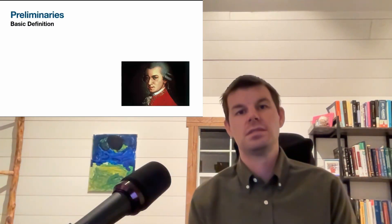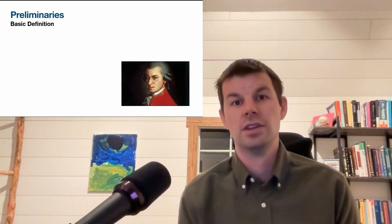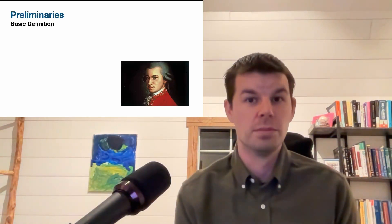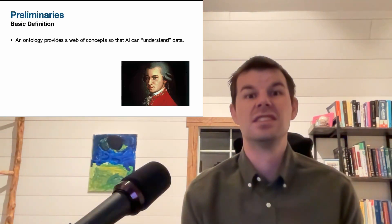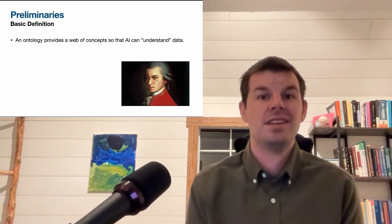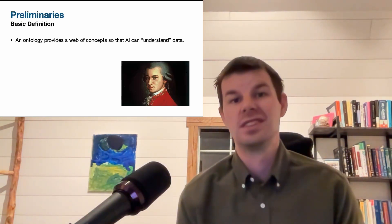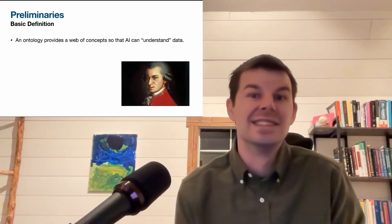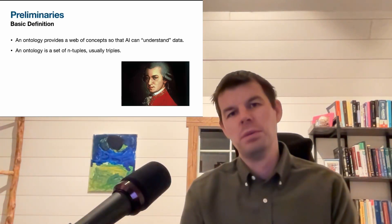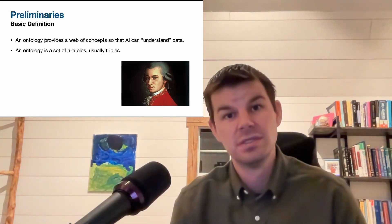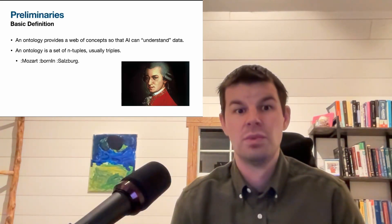Before we get into those, a couple of preliminaries. In the first video, which you should go back and watch if you haven't yet, we covered what an ontology is. It provides a web of concepts so that the artificial intelligence can understand your data, or act as if it were understanding your data. An ontology, maybe more formally, is a set of n-tuples, usually triples.